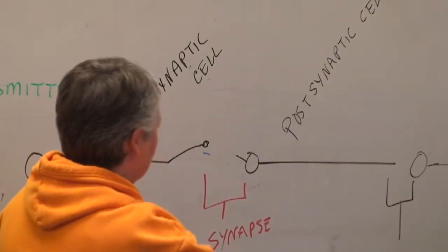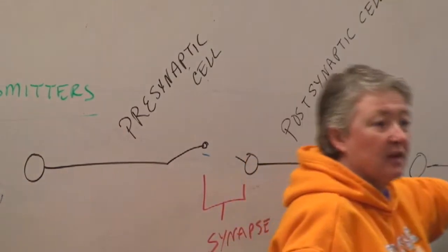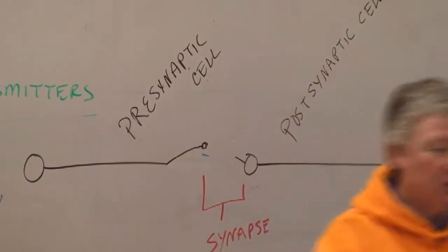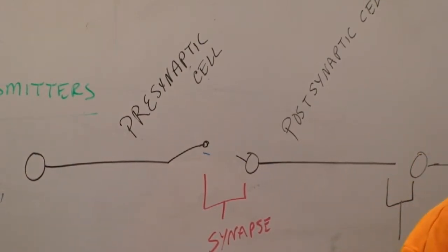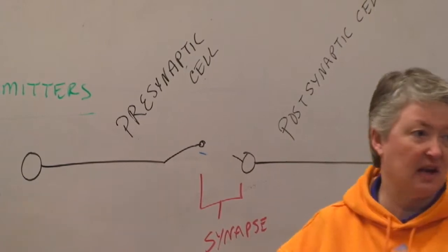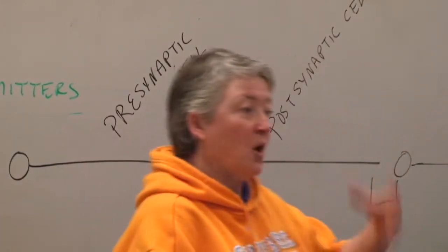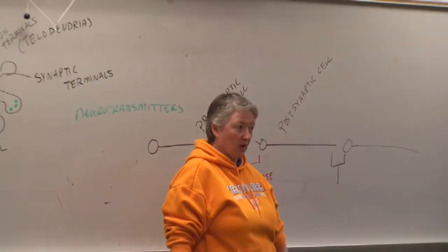We're talking, in this particular example, I've got this neuron communicating with this neuron communicating with that neuron. Right? But you could have, the postsynaptic cell is not always a neuron. It could be a skeletal muscle cell. It could be a gland cell. It could be a cardiac muscle cell. So the postsynaptic cell is not always a neuron.